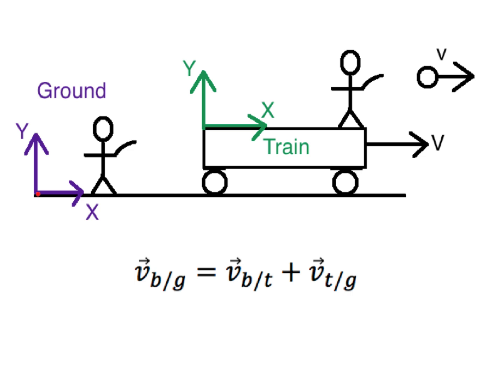The coordinate system in purple is glued to the ground — it's fixed, not moving, the kind we've been using all along. The green coordinate system is glued to the train, so it's moving with the train. I have two different velocities: the big V is the velocity of the train, and the little v is the velocity of the ball. I can measure these either from the moving train coordinate system or from the ground coordinate system.